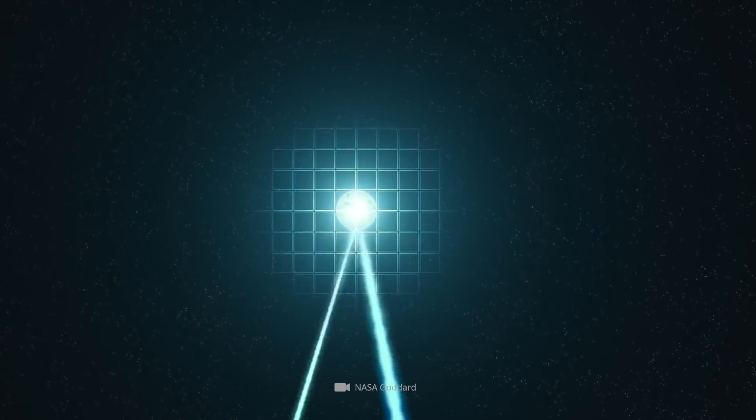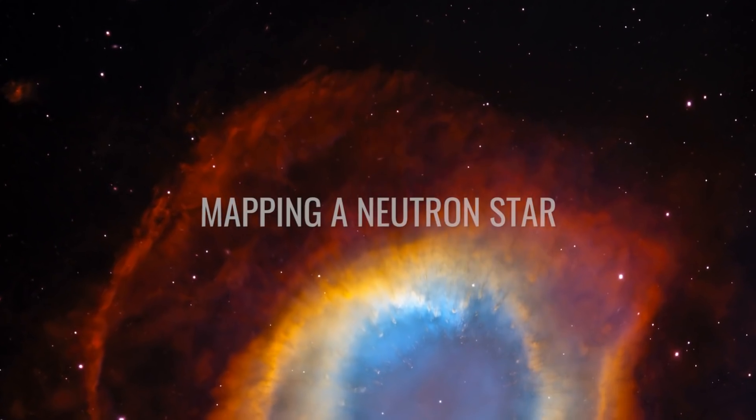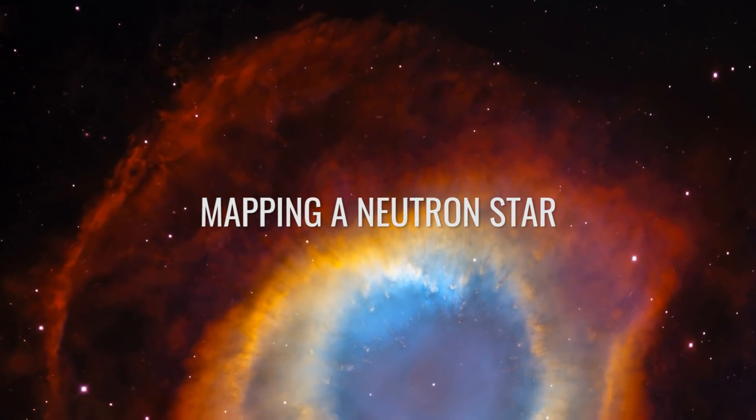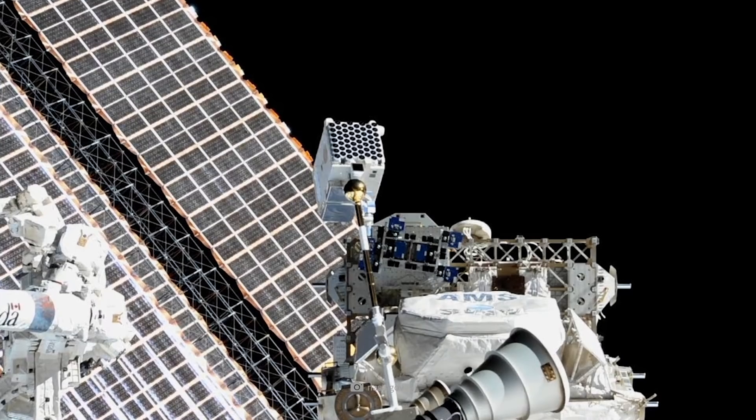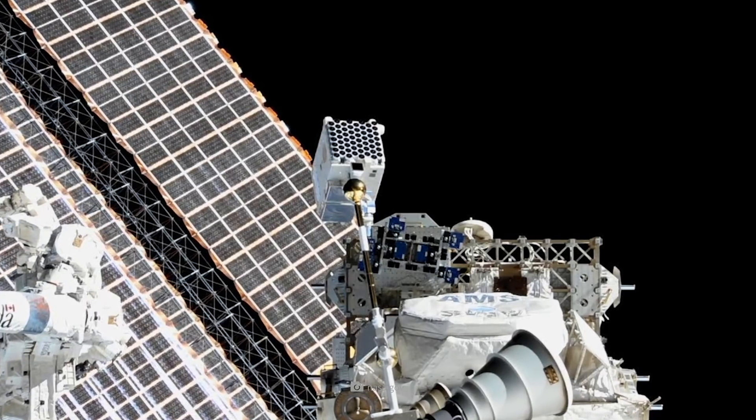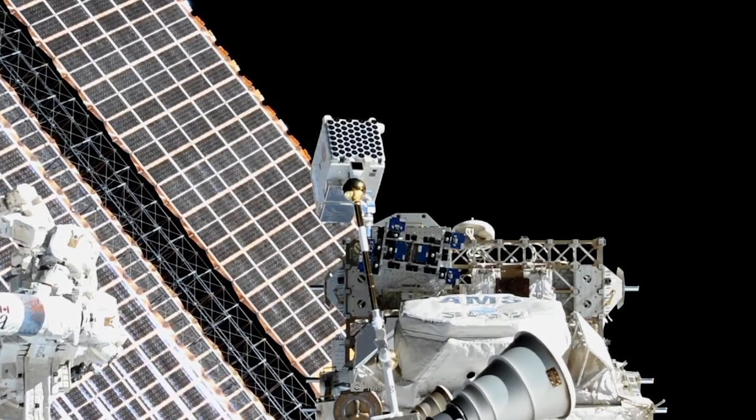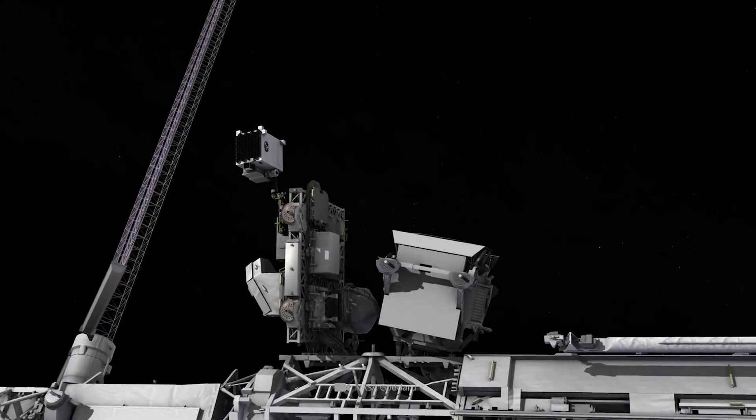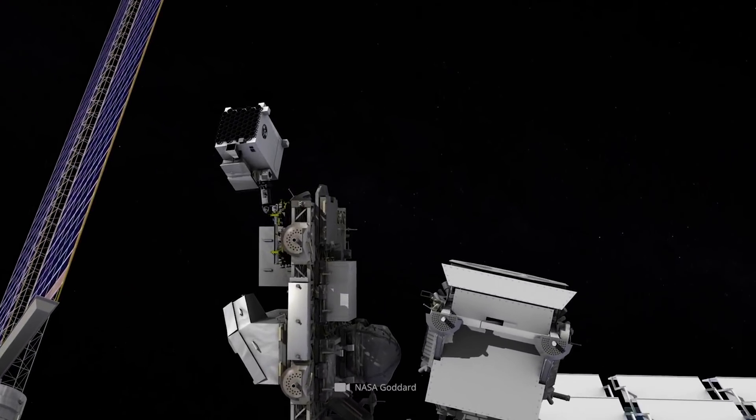Pulsar J0030, Mapping a Neutron Star. Since 2017, the Neutron Star Interior Composition Explorer, or NICER, has been part of the International Space Station's permanent equipment.